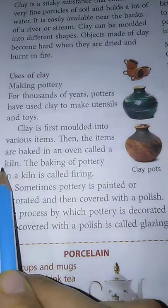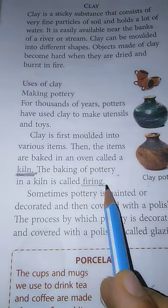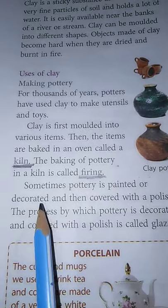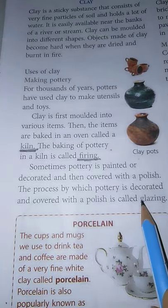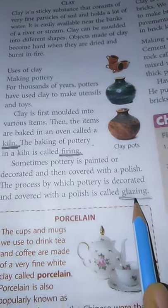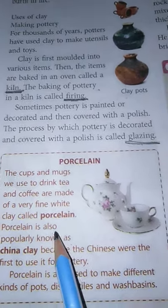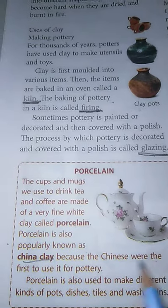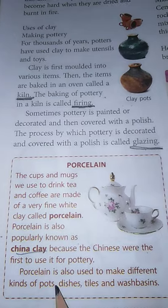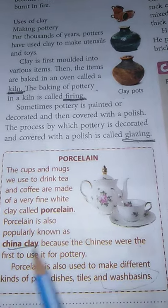First, the clay is given a shape, and then it is baked in an oven called a kiln. This baking of pottery in a kiln is called firing. After that, if required, it is painted, decorated, and polished — this polishing and decorating of pottery is called glazing. Porcelain, the type of cups and mugs we use at home for tea and coffee, is made from clay also known as China clay, because the Chinese were the first to use it for pottery. It is also used for making pots, dishes, tiles, and washbasins.